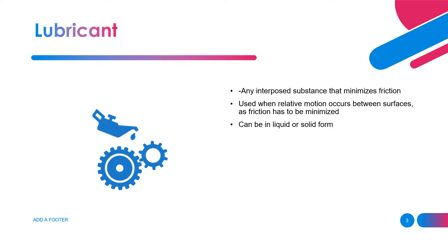A lubricant is any interposed substance that minimizes friction. A lubricant is used when relative motion occurs between surfaces, as friction has to be minimized, and the lubricant could be either in a liquid or a solid form. For example, motor oil in a car is a lubricant because metal parts are moving and touching together, so to reduce friction you use motor oil.